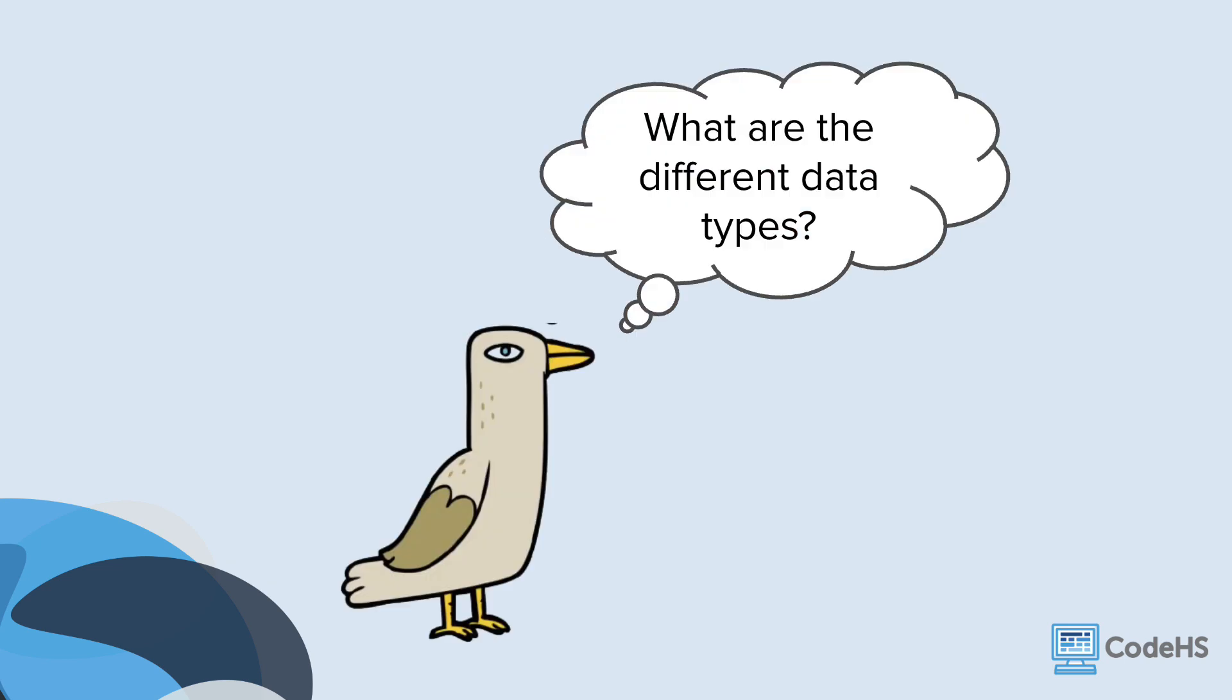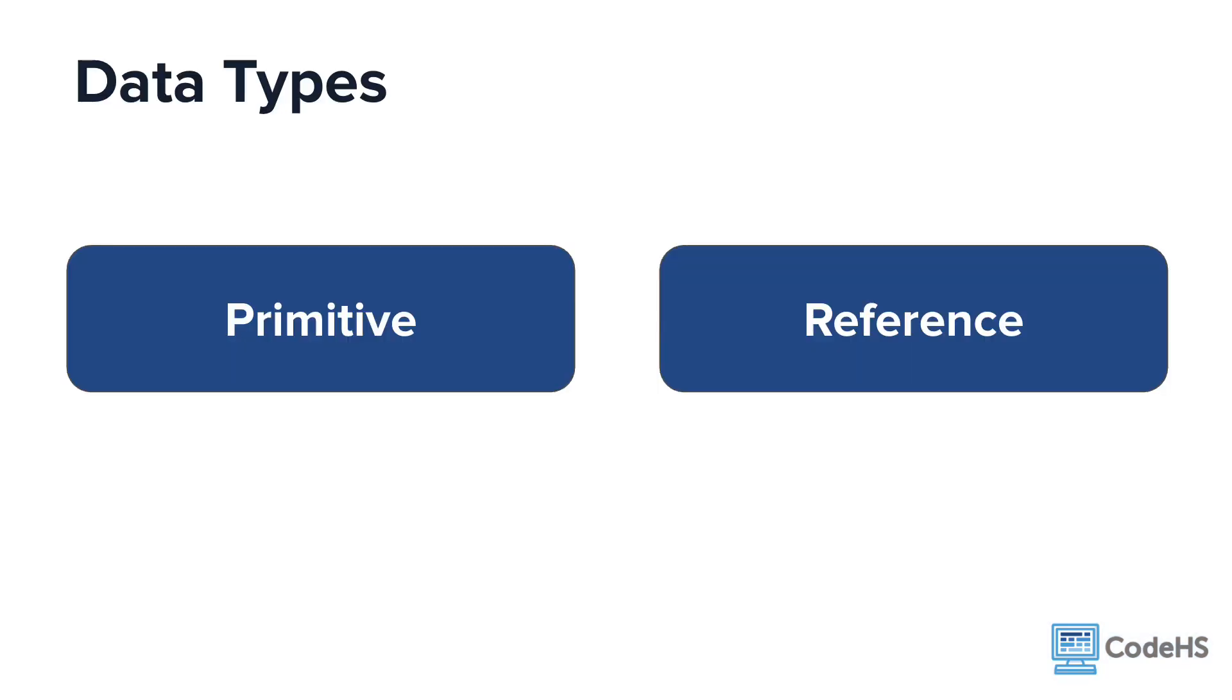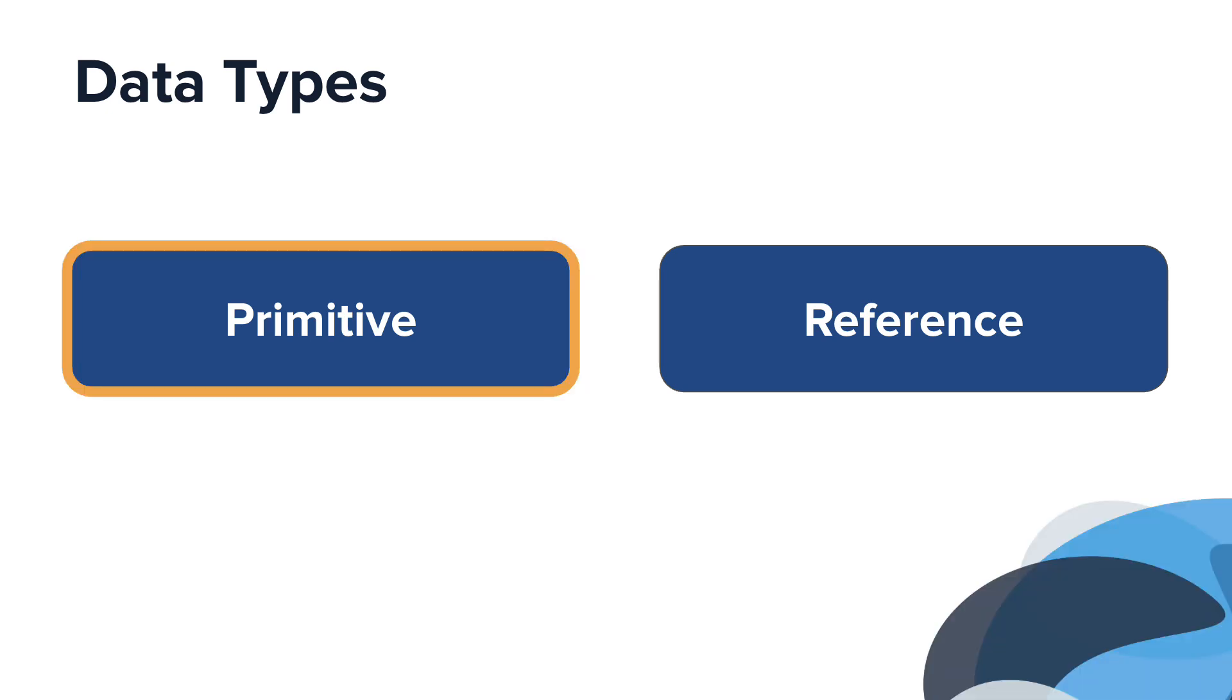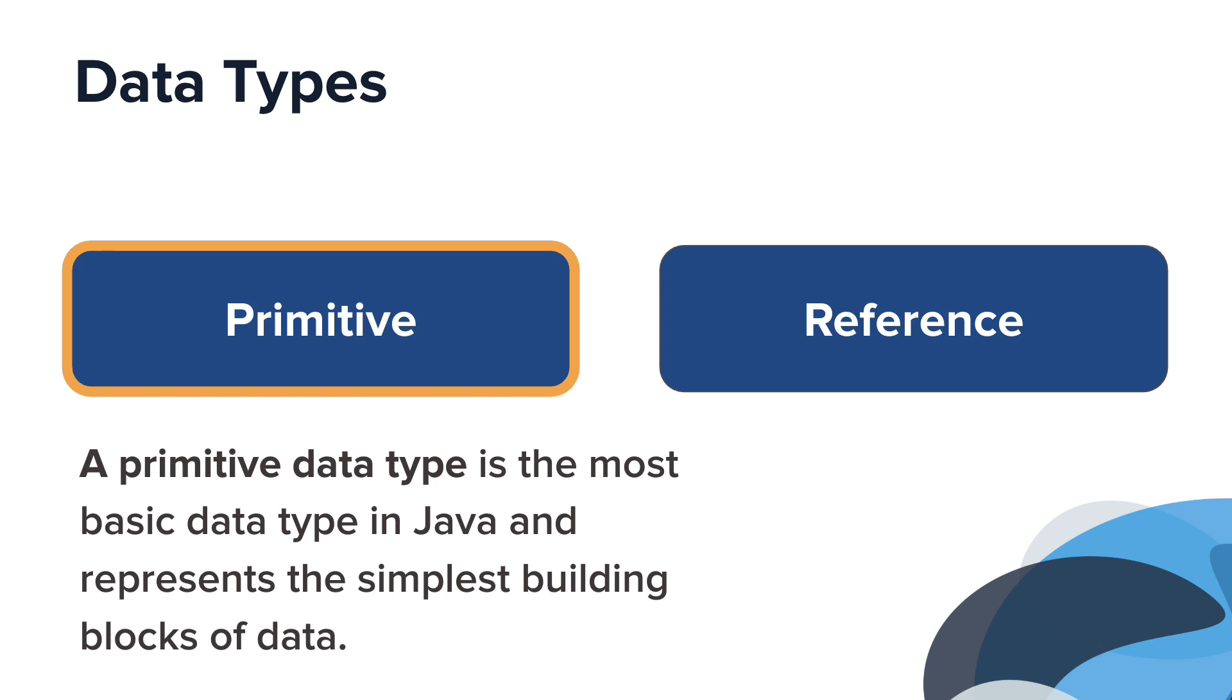So you're probably wondering, what are the different data types? In Java there are two different types of data type, primitive and reference. In this video the focus will be on primitive data types. Primitives are the most basic data type in Java and represent the simplest building blocks of data.